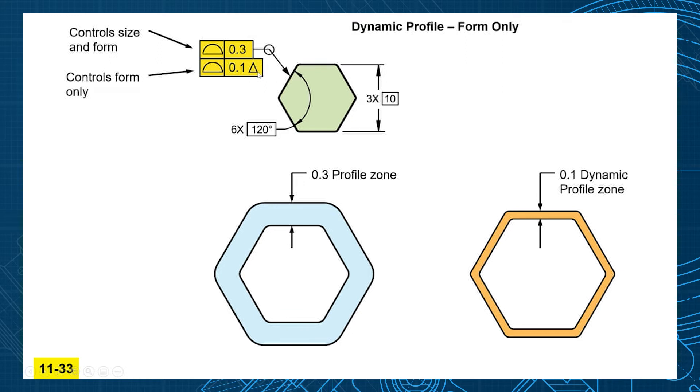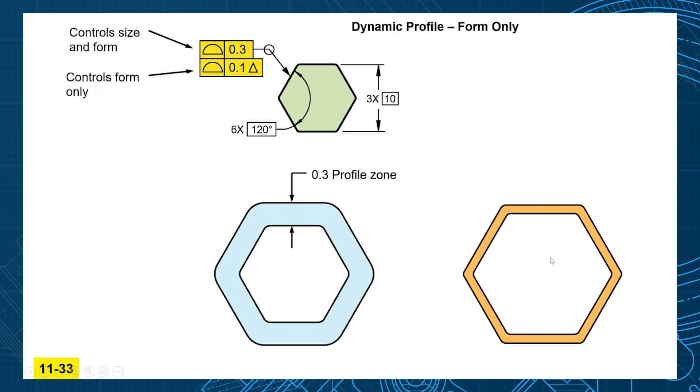It's a little delta symbol that you put behind the tolerance value. So this is a profile of 0.1 dynamic. So dynamic profile means that the distance between the two boundaries has to remain at 0.1 but these tolerance zones can grow and shrink.